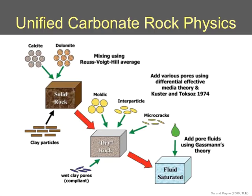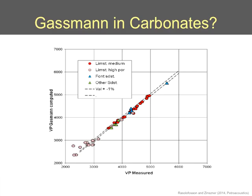Let's talk about rock physics. This diagram from Exxon authors shows a unified carbonate rock physics approach with two basic components: either calcite or dolomite or some combination, plus clay particles. That forms the solid rock, from which we have porosity development — moldic porosity, interparticle, wet clay pores, and cracks — plus fluids. They describe the solid rock using the Reuss-Voigt-Hill average, then use Gassmann theory for fluid saturation effects, and differential effective media theory including Kuster-Toksöz to deal with fractures.